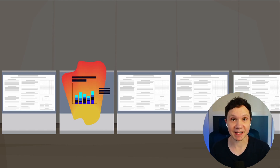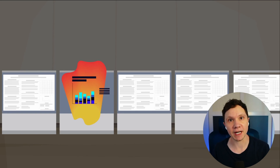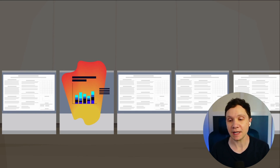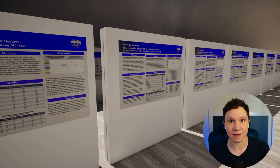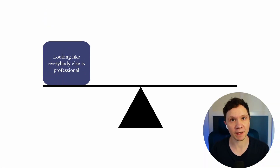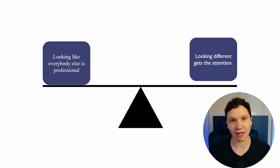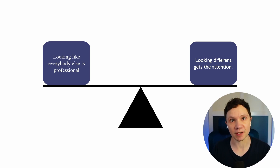That's kind of hard to hear for a lot of you if you're PhD students, because the advice you're going to get from everyone else — the advice your advisor is going to want you to follow — is something like: I want you to look like everybody else. Looking like everybody else feels professional. Looking different actually gets attention. Choose.